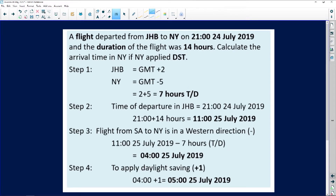Let's do a typical example. A flight departed from Johannesburg to New York on the 24th of July 2019 at 9 o'clock. The duration of the flight was 14 hours. The question asks you to calculate the arrival time in New York, given that New York applies daylight saving time.